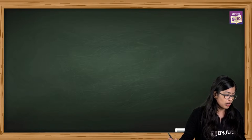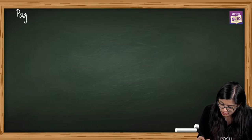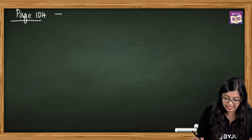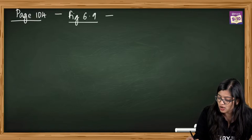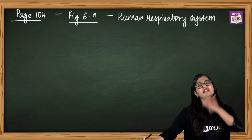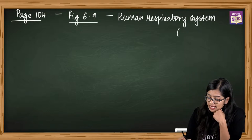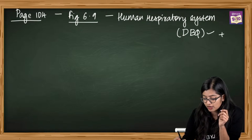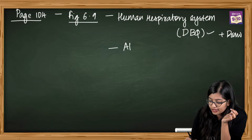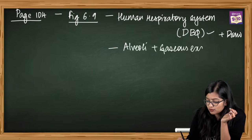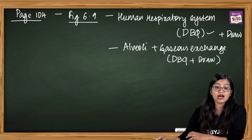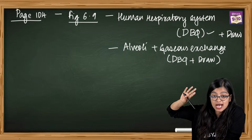Moving to page number 104 - Figure 6.9 is the human respiratory system. The chances of them asking you to draw the whole respiratory system are very slim, but diagram-based questions can come. Also learn to draw the alveoli and gaseous exchange. Sometimes they ask a diagram-based question or may ask you to draw a single alveolus, so I am marking it down.